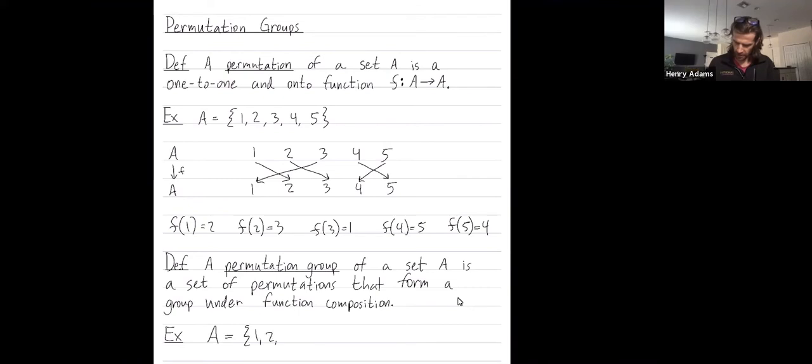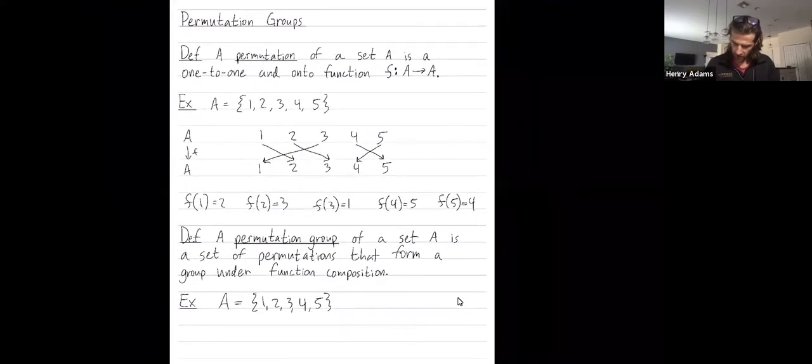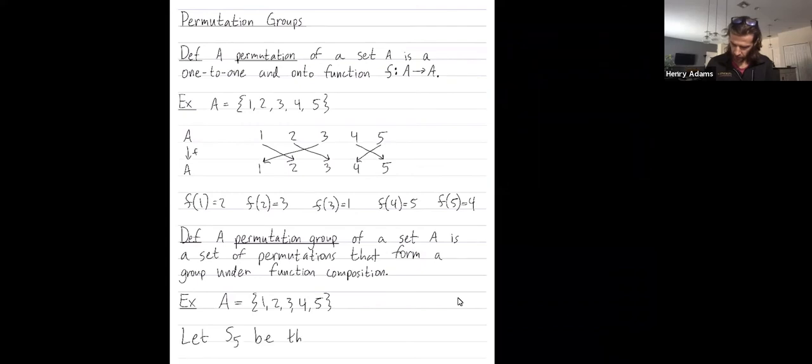Let A be the same set, the numbers from 1 through 5. Let me tell you one example of a permutation group. Let S5 be the group of all permutations on the set of numbers from 1 up to 5.